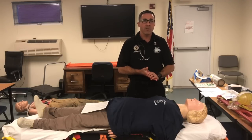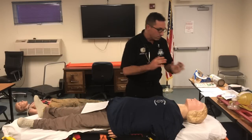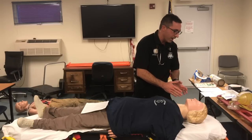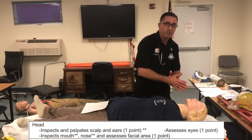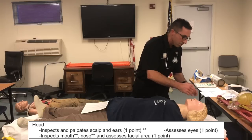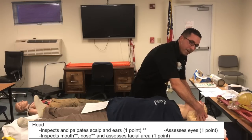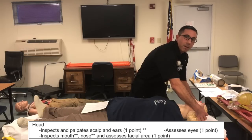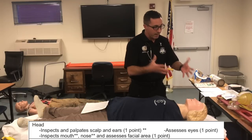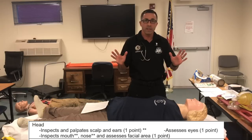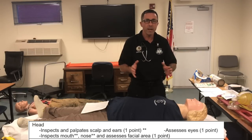Begin the skill by checking the head. Say: I'm going to check my patient's head for DCAP-BTLS and crepitation. Inspect the front, sides, back, and top of the head. Because your hands went behind the patient, it's a good idea to pull them out and ask the proctor if there's any blood on your gloves.